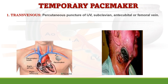Transvenous pacemaker therapy involves percutaneous puncture of the internal jugular vein, subclavian vein, antecubital, or femoral vein to insert the lead. The lead is inserted into the right atrium or right ventricle based on whether unipolar or bipolar, or atrial versus ventricular pacing is required.